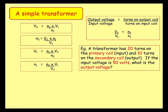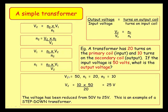Here's an example: a transformer has 20 turns in the primary coil (N1 = 20) and 10 turns in the secondary coil (N2 = 10). The input voltage is 50 volts (V1 = 50). What's the output voltage? Using V2 = (N2/N1) × V1: V2 = (10/20) × 50 = 25 volts. The voltage has been reduced from 50 volts to 25 volts, so this is a step-down transformer.